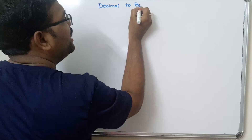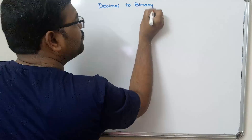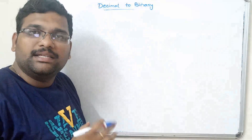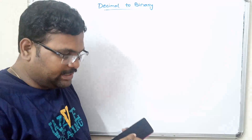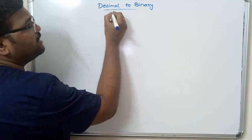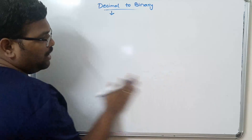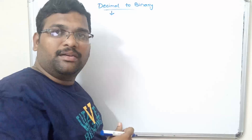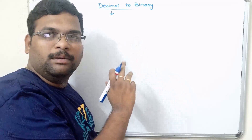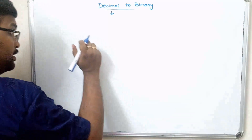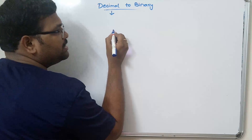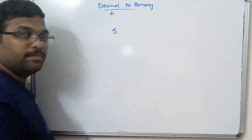So, decimal to binary. As we know, the binary number is a sequence of bits — zeros and ones — and the decimal numbers are complete natural numbers. First let us see the procedure of conversion from decimal to binary, and then we will move on to the program.